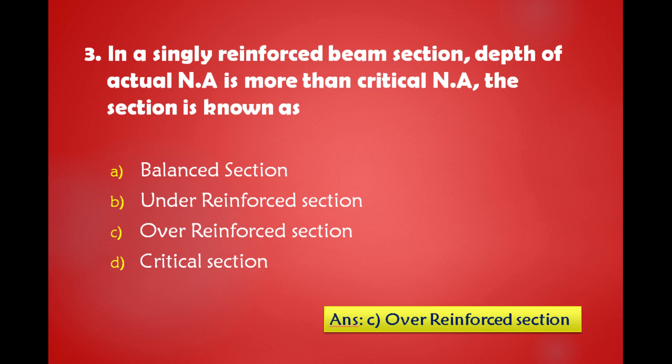In a singly reinforced beam section, depth of actual neutral axis is more than critical neutral axis. The section is known as: a) balanced section, b) under reinforced section, c) over reinforced section, d) critical section. The answer is: in a singly reinforced beam section, depth of actual neutral axis is more than critical neutral axis, the section is known as over reinforced section.